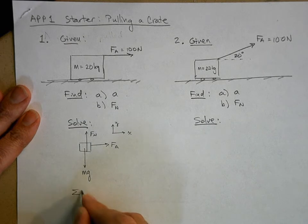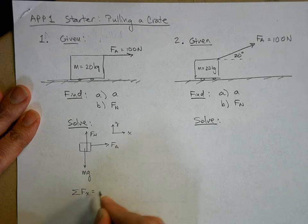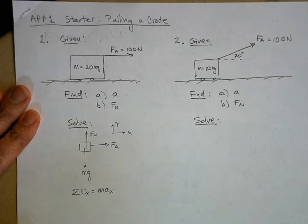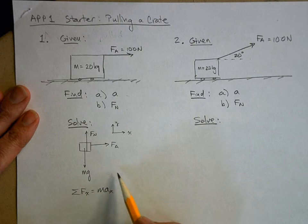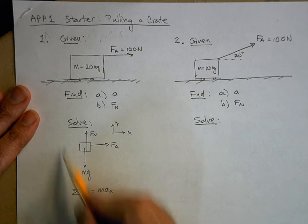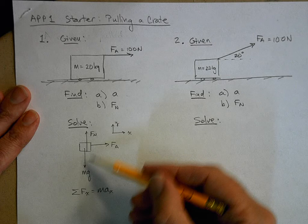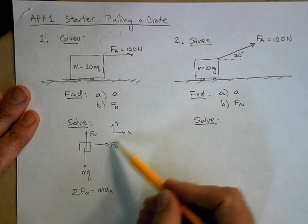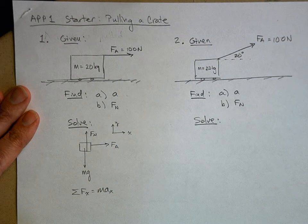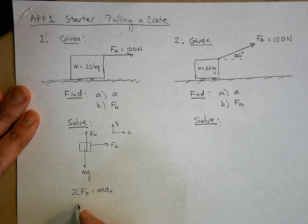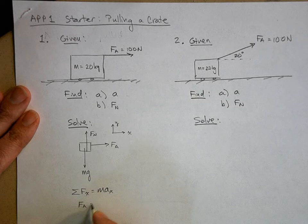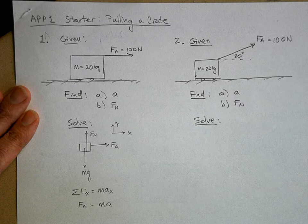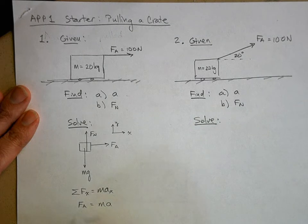Let's do step four. Let's sum the forces in the x direction equals ma in the x direction. I look at my free body diagram and say, what are the forces in the x direction? The normal force and the weight are in the y direction, but the applied force is in the x direction and it's the only force. Therefore it is the net force and it will be equal to ma. So now I can do step five, at least for part A.